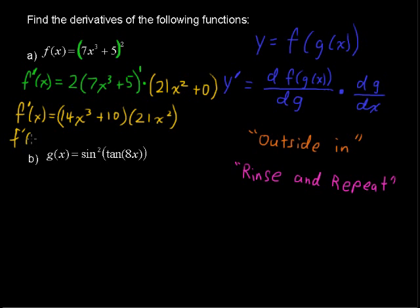So in the end, our derivative simplifies as 21 times 14 is going to be 280 plus another 14 is 294 x to the fifth plus 210x squared. All right, so that was the first example.